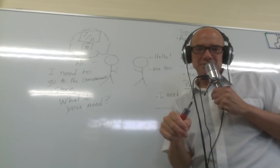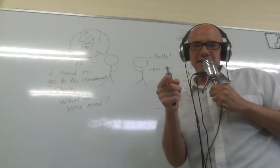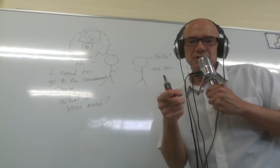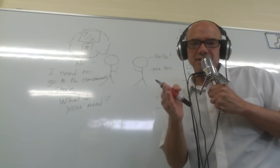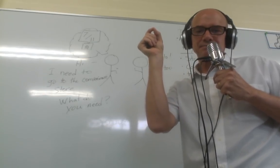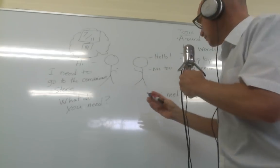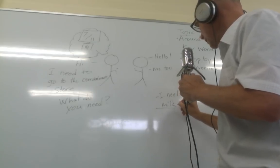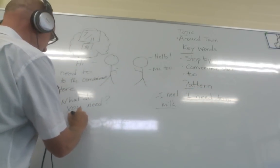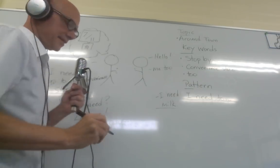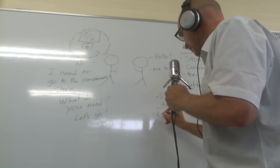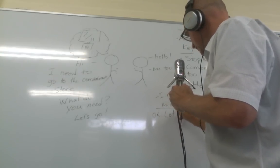Somebody wrote something to eat — okay, good. And milk. So, let's be more specific: I need something to eat — like, for example, I need yogurt or something. Okay, milk: I need milk. Great. And then maybe this person says, 'Let's go.' And they agree: 'Let's go.' And then they go to the convenience store together.